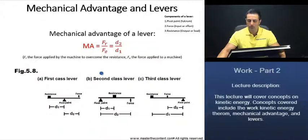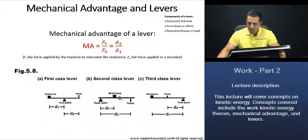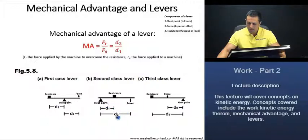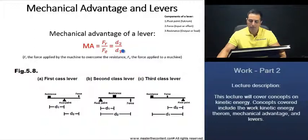Second class levers have the resistance between the pivot point and the force. In regards to mechanical advantage, since the resistance is between the pivot point and the force, D2 is going to be larger than D1, meaning the force is farther from the pivot point than the resistance. Therefore, the mechanical advantage is always going to be greater than 1 for second class levers.